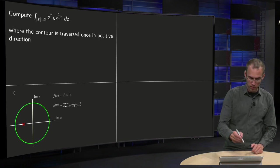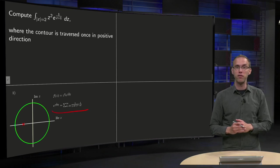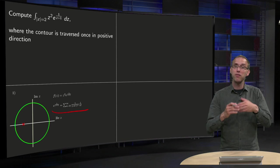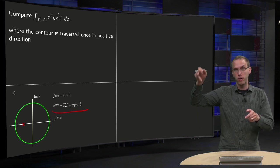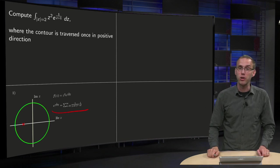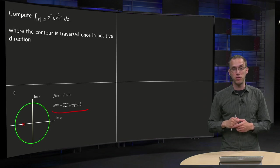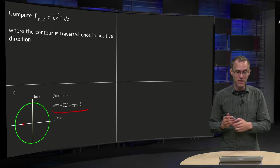If z equals minus 1, we have the power series expansion of the exponent over there, then you see you have an infinite number of terms, 1 over z plus 1, 1 over z plus 1 squared, 1 over z plus 1 cubed, with some n factorials, so an infinite number of negative powers of z plus 1. So we have an essential singularity.